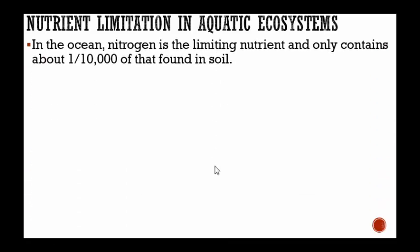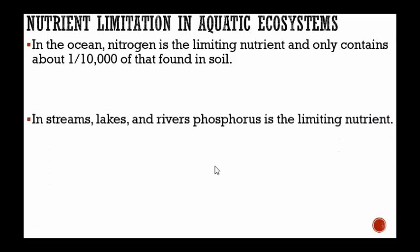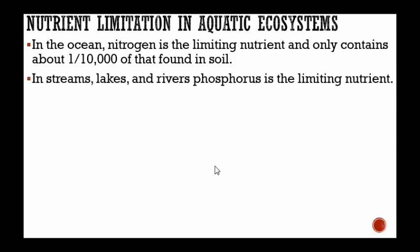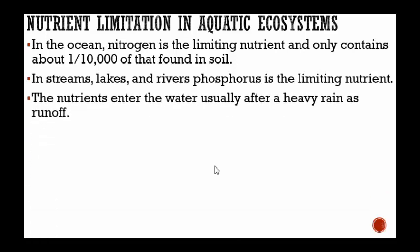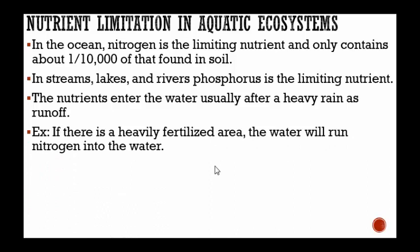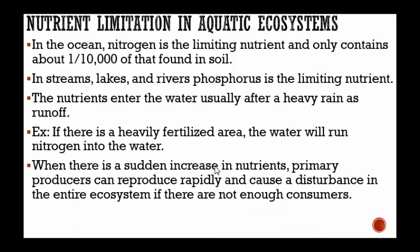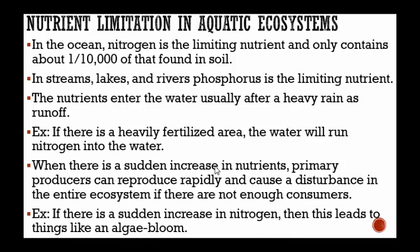In aquatic ecosystems: in the ocean, nitrogen is the limiting nutrient and only contains about one ten-thousandth of that found in soil. In streams, lakes, and rivers, phosphorus is the limiting nutrient. Nutrients enter the water usually after a heavy rain as runoff. For example, if there is a heavily fertilized area, water will run nitrogen into the water. When there is a sudden increase in nutrients, primary producers can reproduce rapidly and cause a disturbance in the entire ecosystem if there are not enough consumers to keep the population in check. A sudden increase in nitrogen can lead to things like an algae bloom, which can get out of control and make it very hard for things to get back to normal.